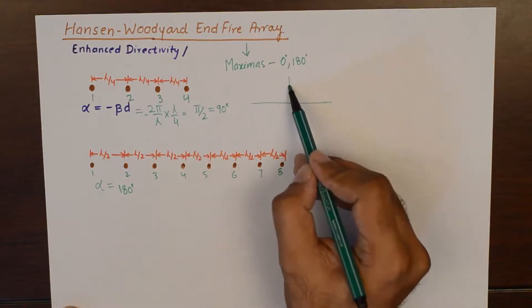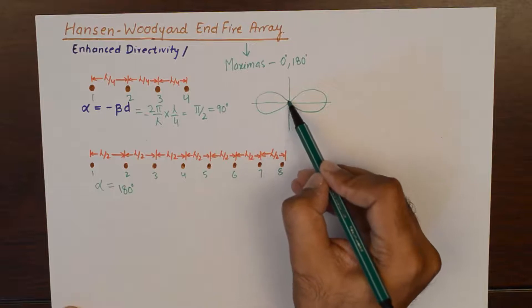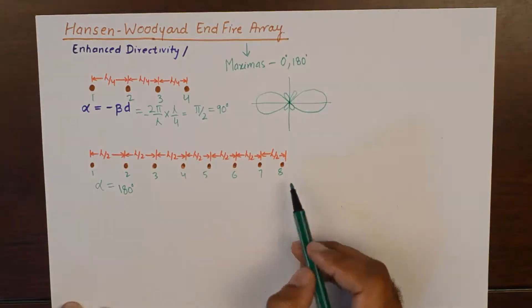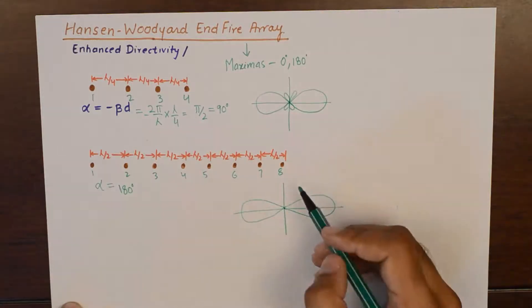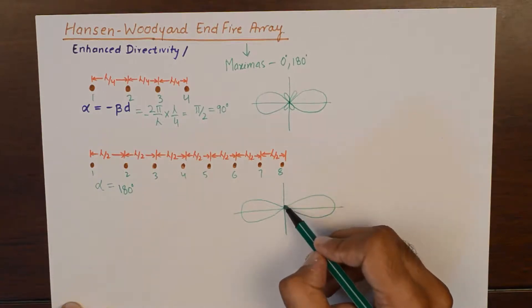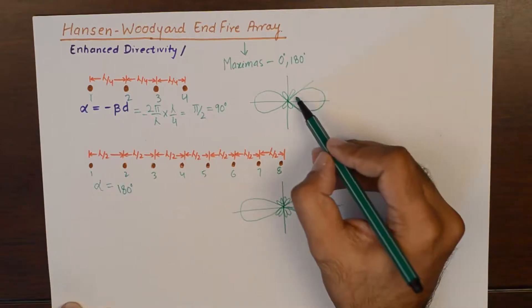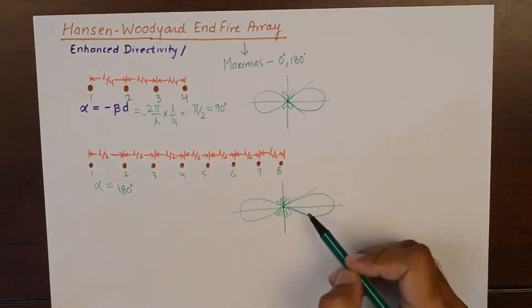For example, the radiation pattern for an end-fire array for 4 elements would look something like this. And if we go on to draw the radiation pattern for 8 elements end-fire array, it will have more number of side lobes but the directivity will increase. You can see the major lobe is more wide as compared to the major lobe here.